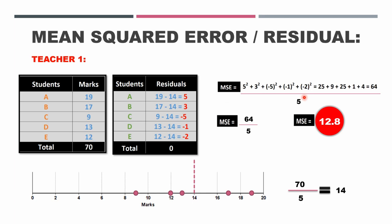Then he took a mean of these, that is, he took mean squared error, which is coming out to be 12.4 for teacher number 1.